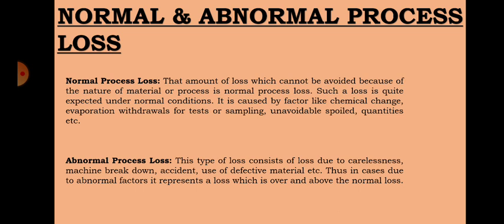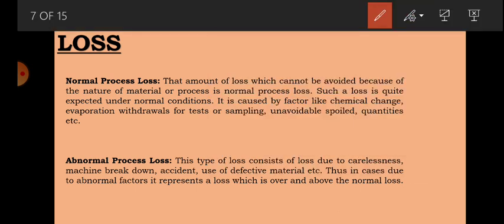Next is normal and abnormal process loss. In a process, some loss occurs — we look at whether it is normal or abnormal. Normal loss is that amount of loss which cannot be avoided, because of the nature of the material or the process. Such a loss is quite expected under normal conditions. For example, if we do a chemical reaction, whatever chemical evaporates is unavoidable loss due to the nature of the material, because chemicals naturally evaporate.